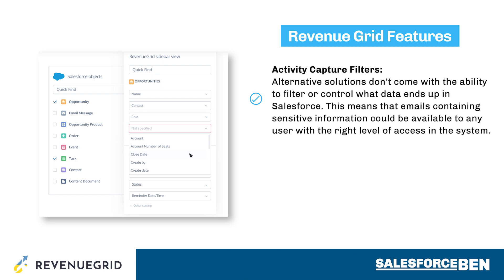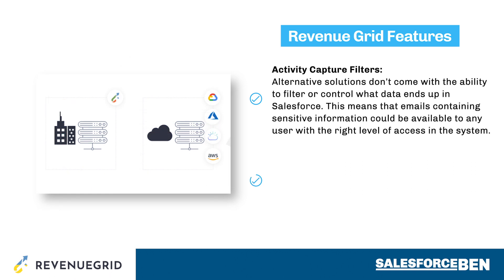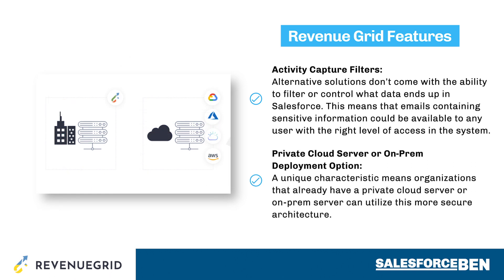You may not know that alternative solutions don't come with the ability to filter or control what data ends up in Salesforce. This means emails could contain sensitive information and become available to any user with the right level of access to the record they're related to. This is worthwhile for certain industries such as financial services to check, as it will be an essential requirement for their architecture. The private cloud server or on-prem deployment option is a unique characteristic of Revenue Grid, meaning organizations can utilize their more secure architecture.